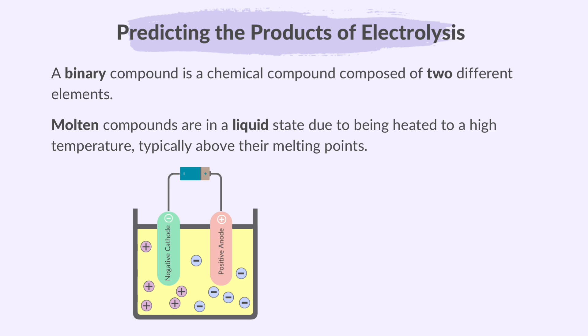Example, in NaCl, the ions present will be Na plus and Cl minus.